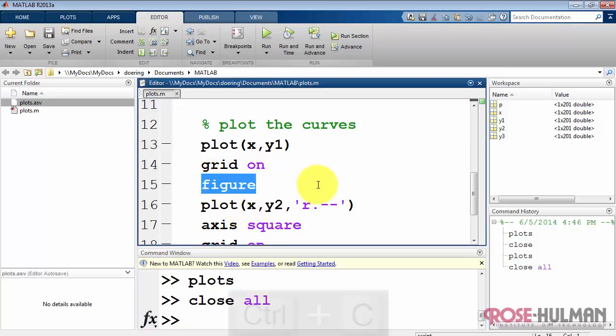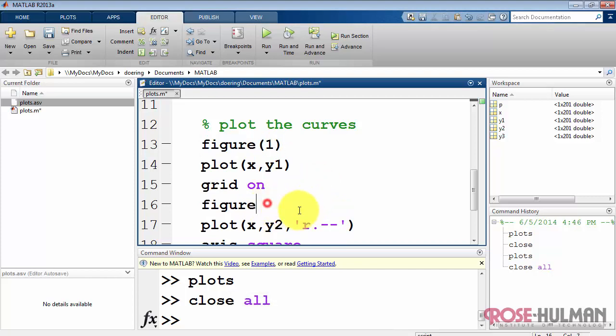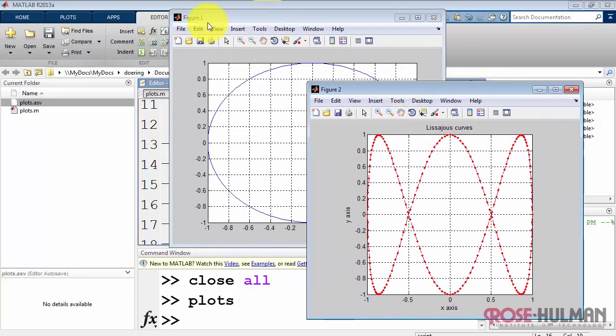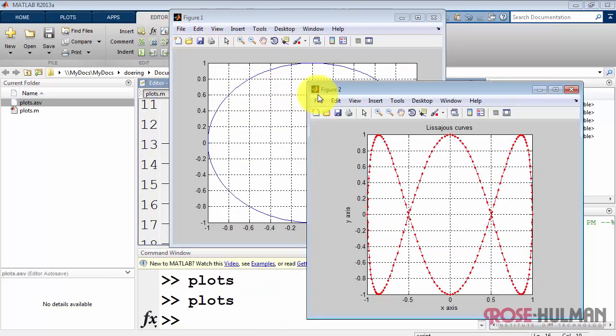Now figure alone simply creates a new figure. If you say figure parentheses number, that directs the plot command to a given figure window, and if the figure window is not already open, then it creates it.